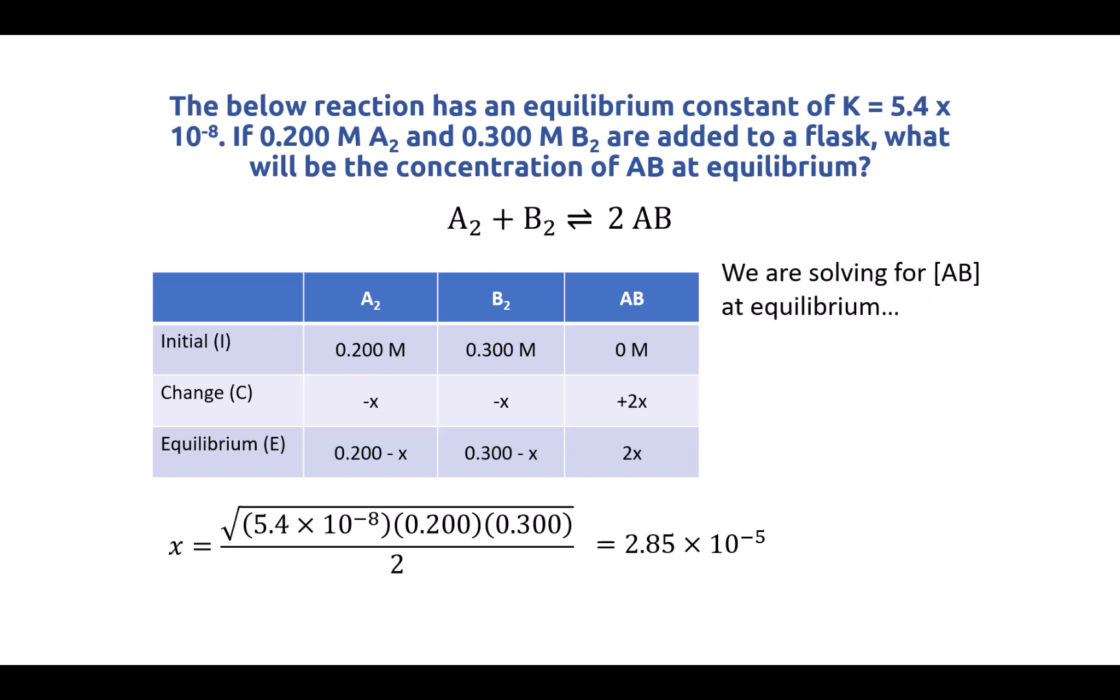So let's remind ourselves what we're solving for. We are solving for the concentration of AB at equilibrium. Now if we look at our ICE table, we can see that at equilibrium AB has a concentration of 2x. So we have our value of x, that means we can now solve for what AB is equal to. So we're going to take our x value and multiply it by 2. And that's going to give us our answer of 5.69 times 10 to the minus 5 molar.